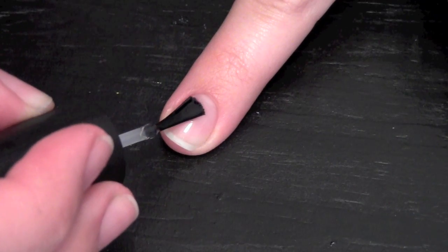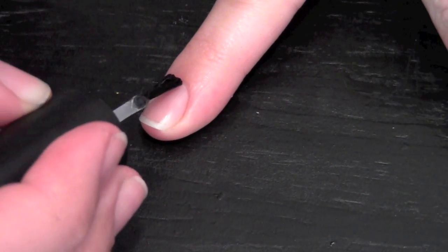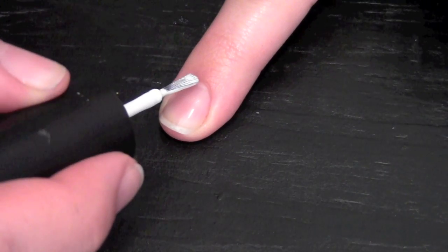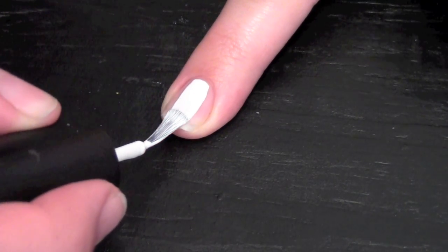Always start by applying a clear base coat. Once that dries, apply two coats of white polish to all your nails.